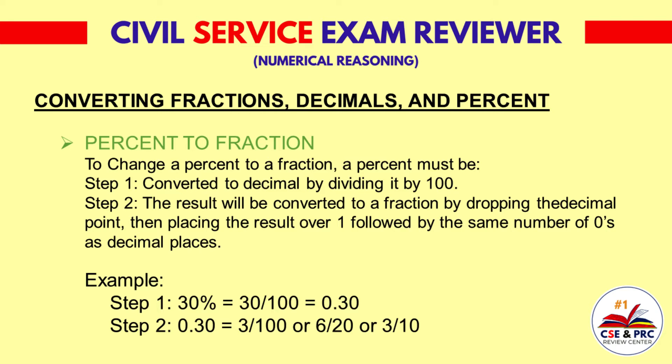Example. Step 1: 30% equals 30 divided by 100, which is equal to 0.30. Step 2: 0.30 is equal to 30 over 100, which simplifies to 3 over 10.